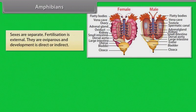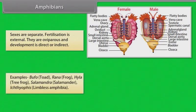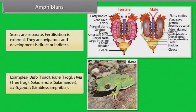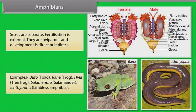Sexes are separate. Fertilization is external. They are oviparous and development is direct or indirect. Examples: Bufo (Toad), Rana (Frog), Hyla (Tree Frog), Salamandra (Salamander), Ichthyophis (Limbless Amphibia).